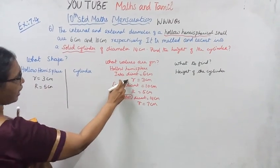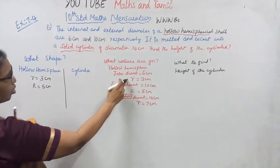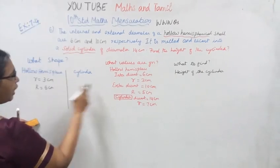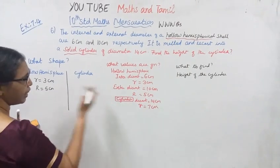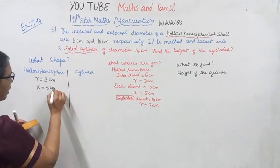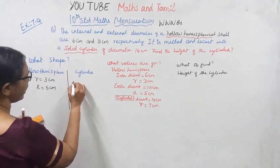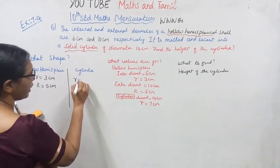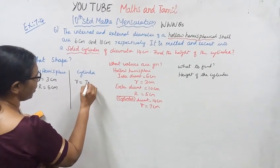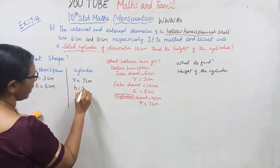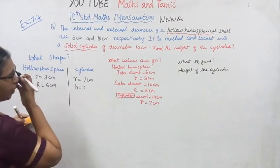Internal radius small r equals 3 cm. External radius capital R equals 5 cm. Cylinder radius equals 7 cm. Height h is what we need to find — the height of the cylinder.